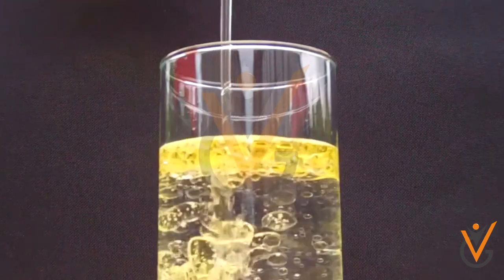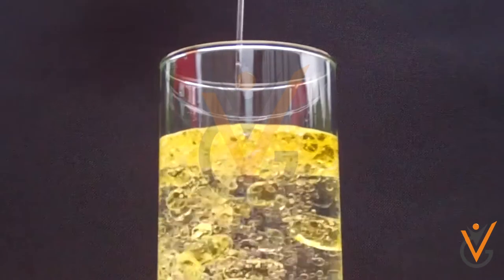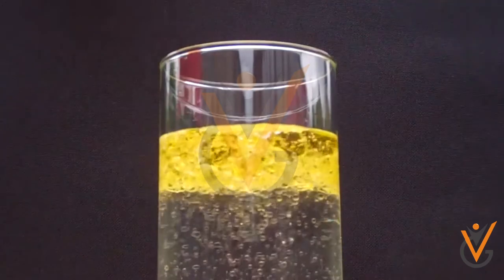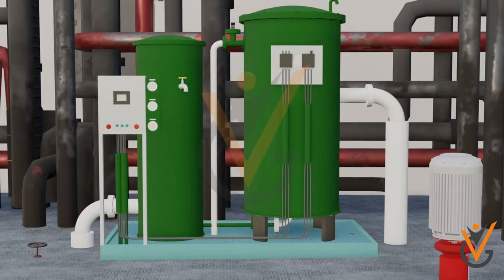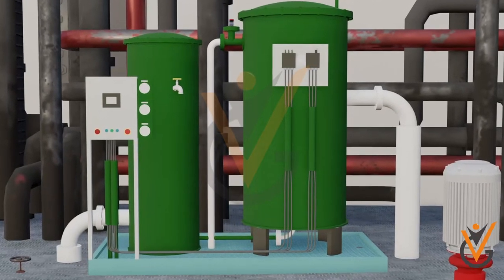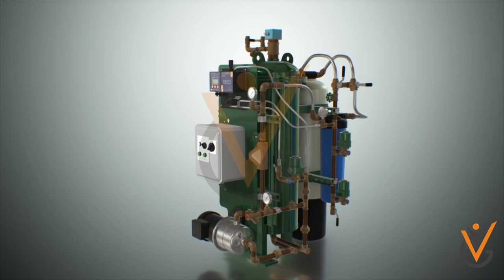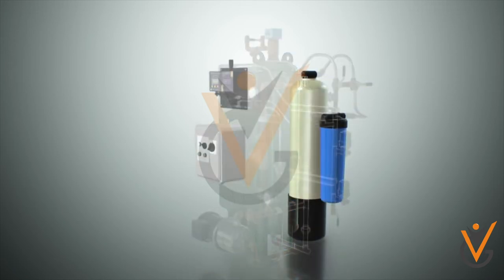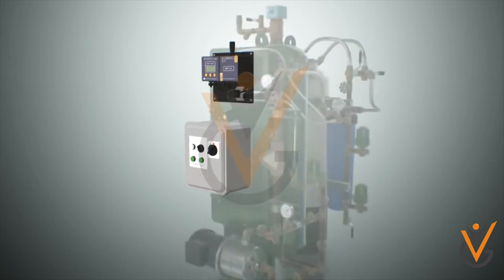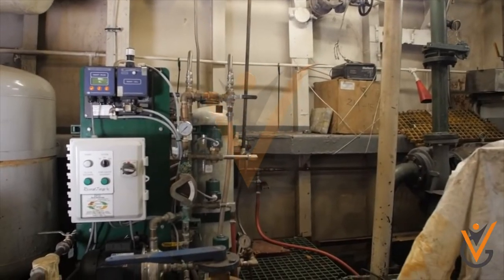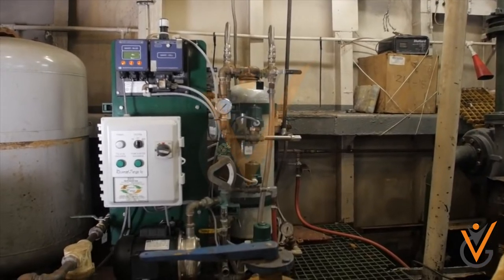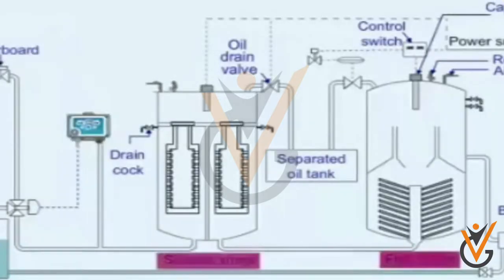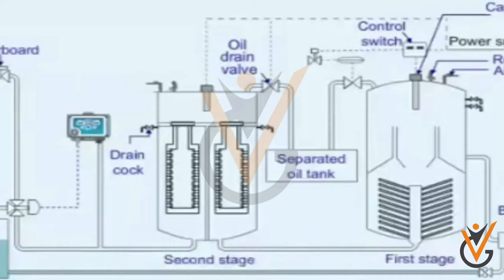The oily water separator works on the principle of gravity differential between oil and water. The construction of an oily water separator is simple, with three main parts: separator, filter, and control unit, with no moving parts. The whole arrangement is separated into two compartments — one for the separator and one for the filter. The complete unit is filled with clean water before operation.